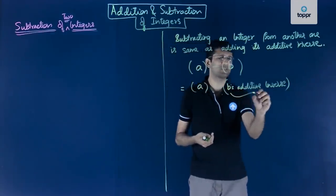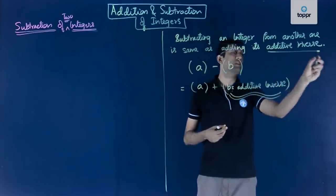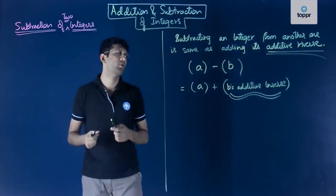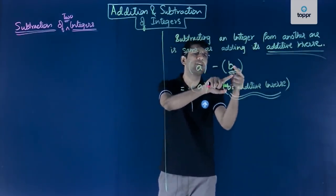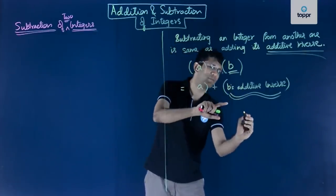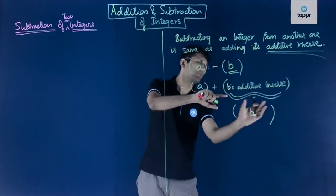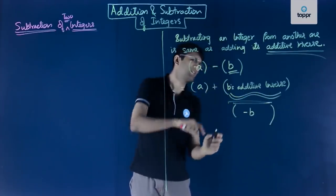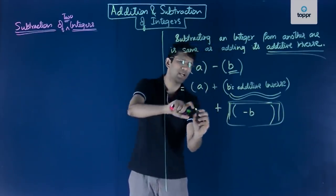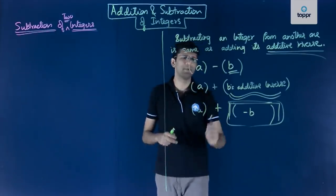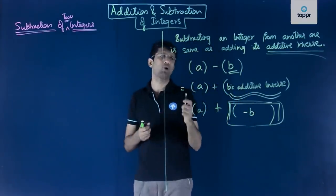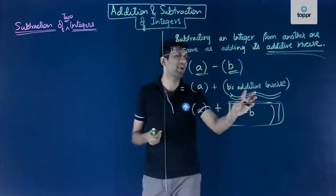The additive inverse of any integer is that value which, when added to the integer, gives zero. So the additive inverse of b is simply −b. Therefore, a − b becomes a + (−b). We have now converted a subtraction problem into an addition of two integers, which we already know how to solve.